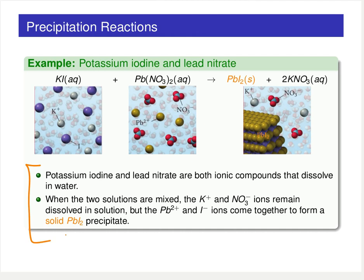This class of double displacement reactions is more general. We're going to be talking about different types of double displacement reactions as we move forward in the course. This specific example of a double displacement reaction is that of a precipitation reaction because we're getting that solid lead iodide.